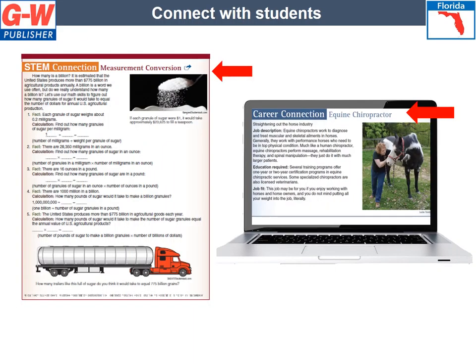Other special features found in the textbook include STEM Connections and Career Connections. STEM Connections appear frequently within lessons and challenge learners to apply Agriculture, Food, and Natural Resources concepts more generally and integrate all four components of STEM education as well as social sciences and language arts. Career Connections introduce students to careers in every field of agriculture.